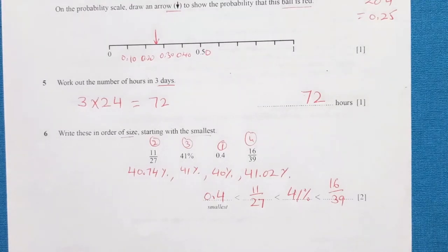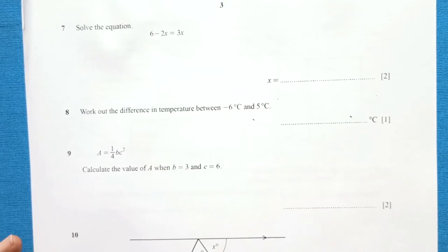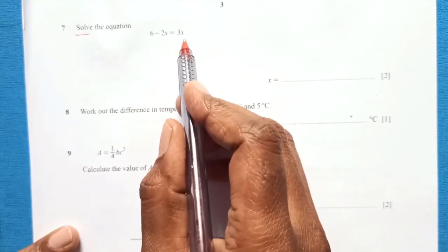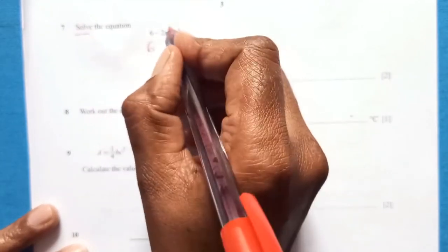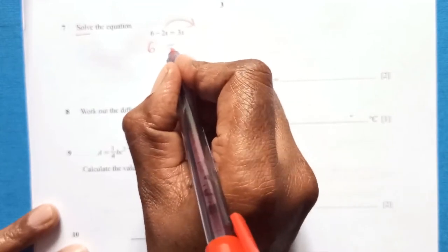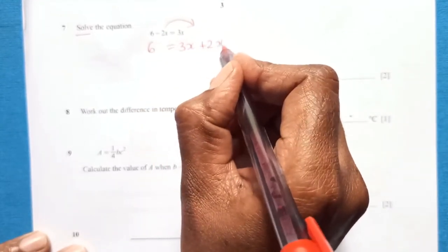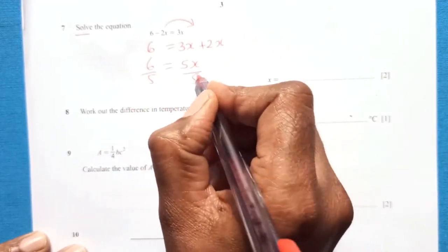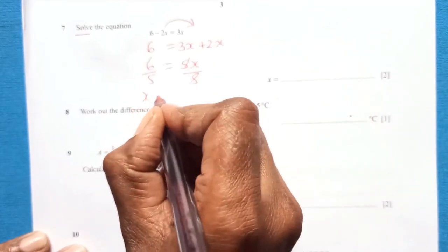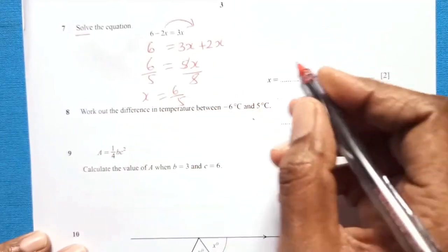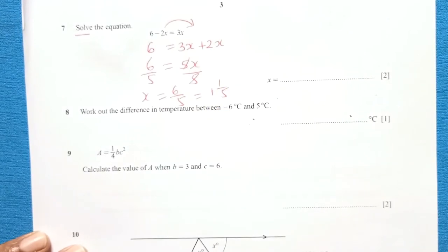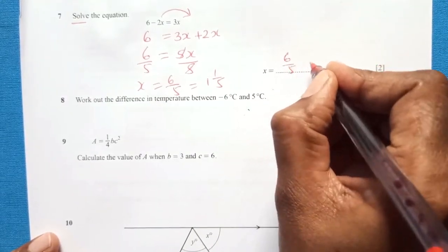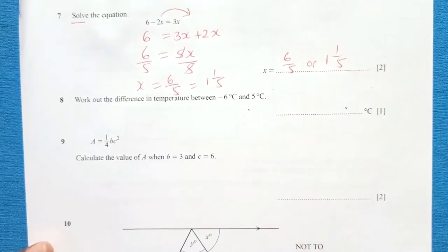Question 7: solve the equation. We need to find the value of x. We shift 2x to the other side: 3x + 2x = 6, so 5x = 6. Divide both sides by 5, giving x = 6/5, which can also be written as 1 and 1/5 as a mixed fraction.